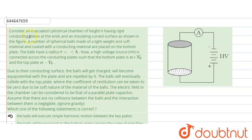In this question, consider an evacuated cylindrical chamber of height H having a rigid conducting plate at the end and an insulating curved surface as shown in the figure. A number of spherical balls made of lightweight and soft material are coated with conducting material and placed on the bottom plate. This is the bottom plate and this is the upper plate where we are placing these small conducting balls.